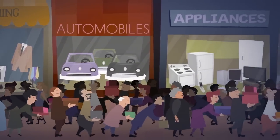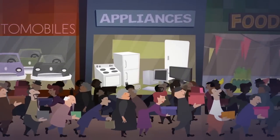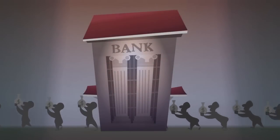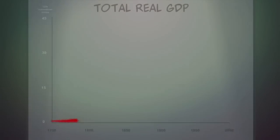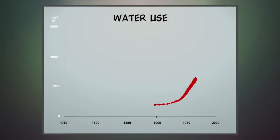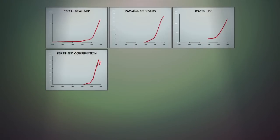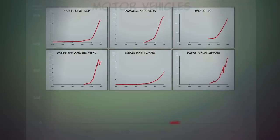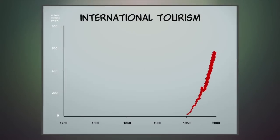Like a Ponzi scheme, the system must expand or die. Partly through this debt system, the effects of economic growth have been spectacular, in GDP, damming of rivers, water use, fertilizer consumption, urban population, paper consumption, motor vehicles, communications and tourism.